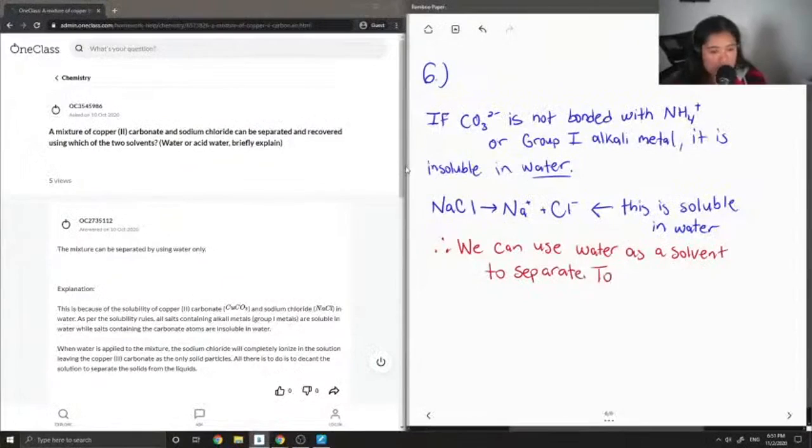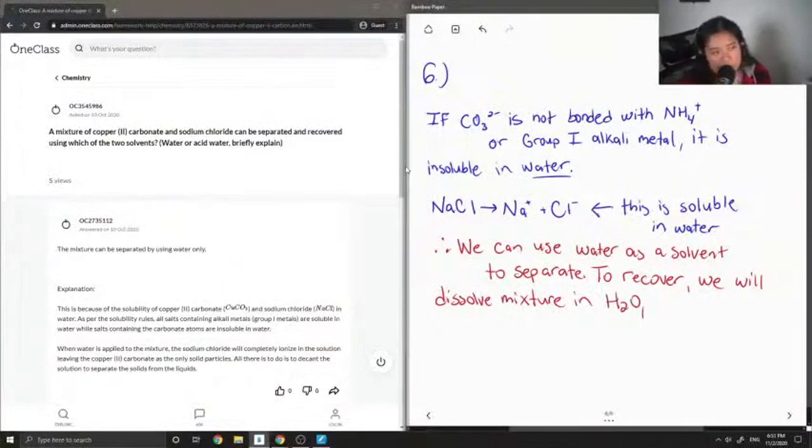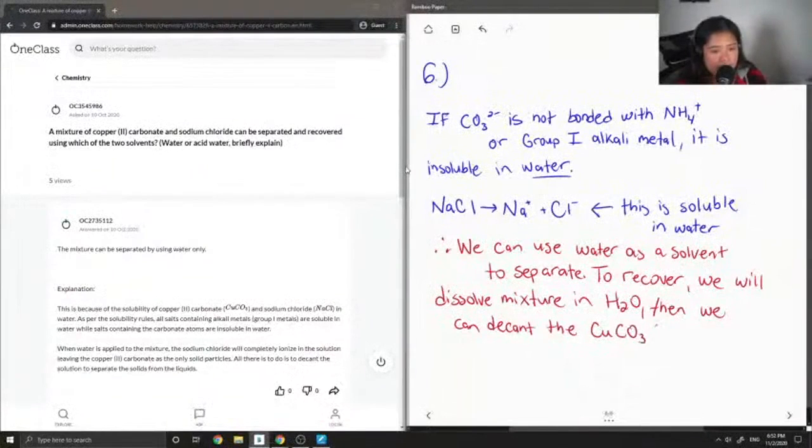So to recover, since that's kind of like the second part of the question, we will dissolve the mixture in water. And then this will make our sodium chloride the only one that is dissolved, and our copper-2-carbonate will be a solid. So then we can decant the copper-2-carbonate solid to separate.